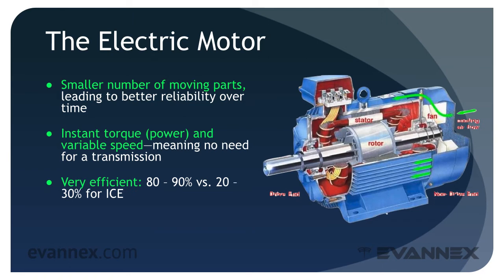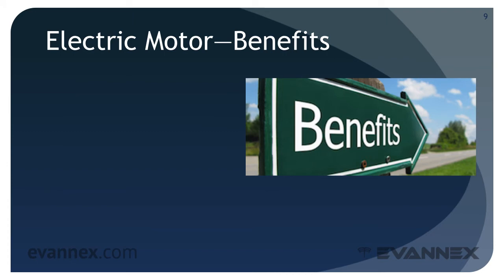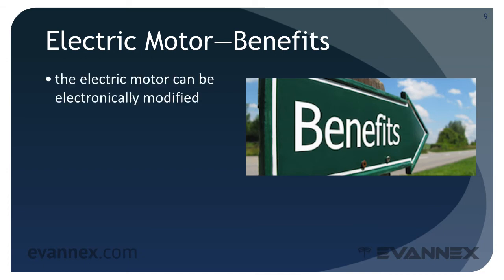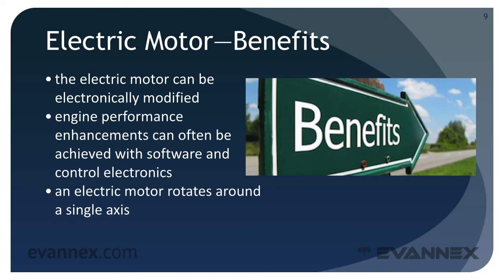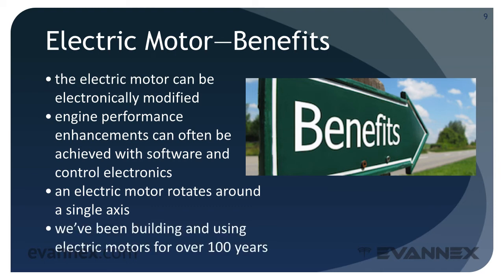Finally, electric motors have zero emissions. There are even more benefits. The electric motor can be electronically modified, enabling it to become a generator. This allows regenerative braking that converts the forward motion of the car, called kinetic energy, into electricity that recharges the battery. Engine performance enhancements can often be achieved with software and control electronics. An electric motor rotates around a single axis, leading to reduced vibration and a longer life. And finally, we've been building and using electric motors for well over a hundred years — this isn't bleeding edge tech.